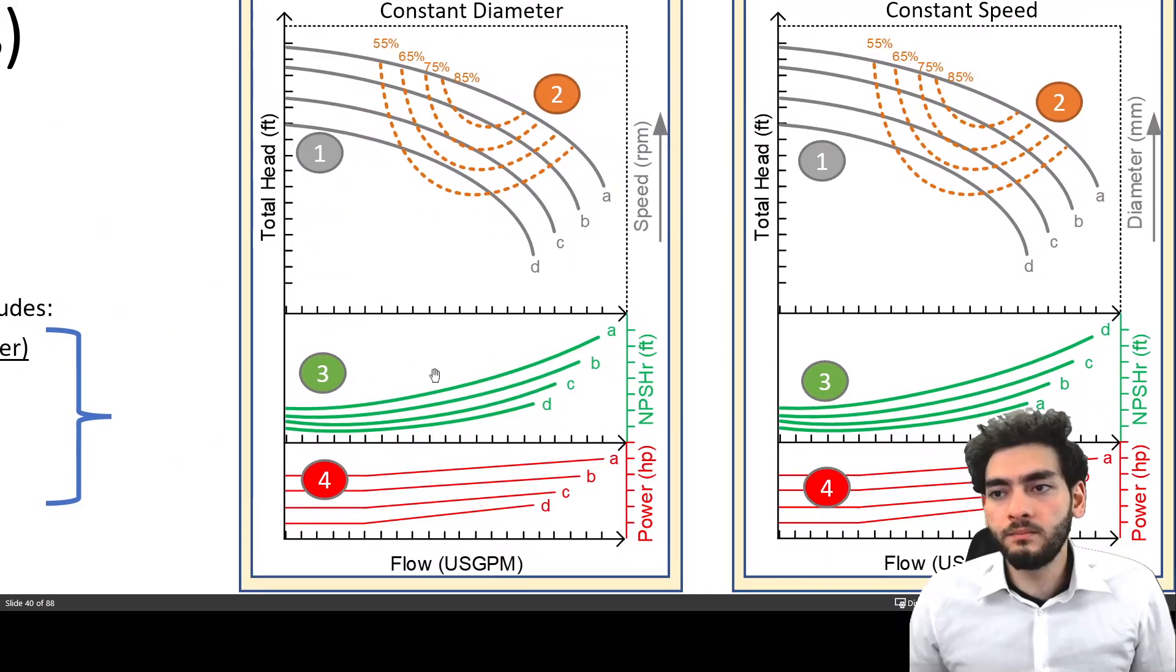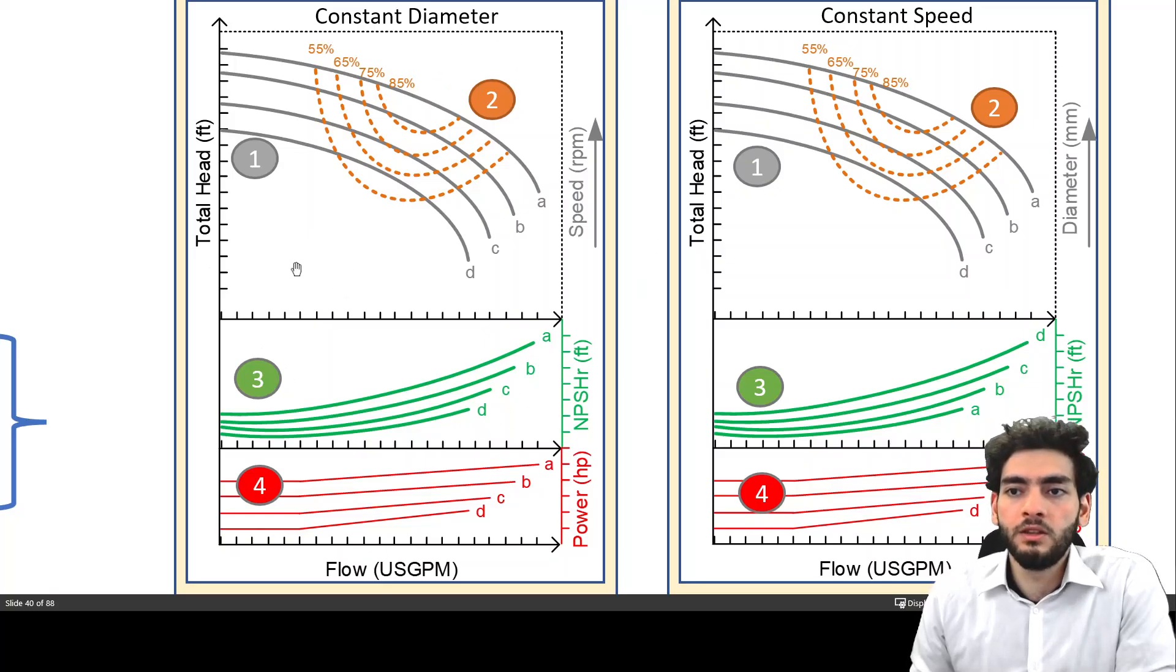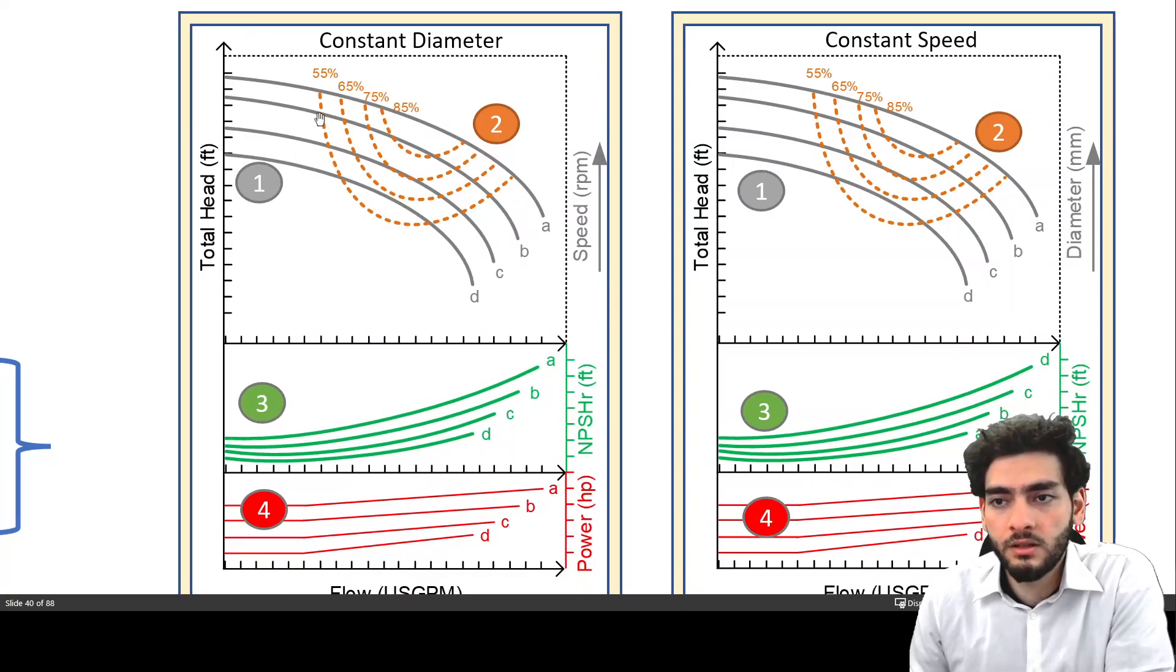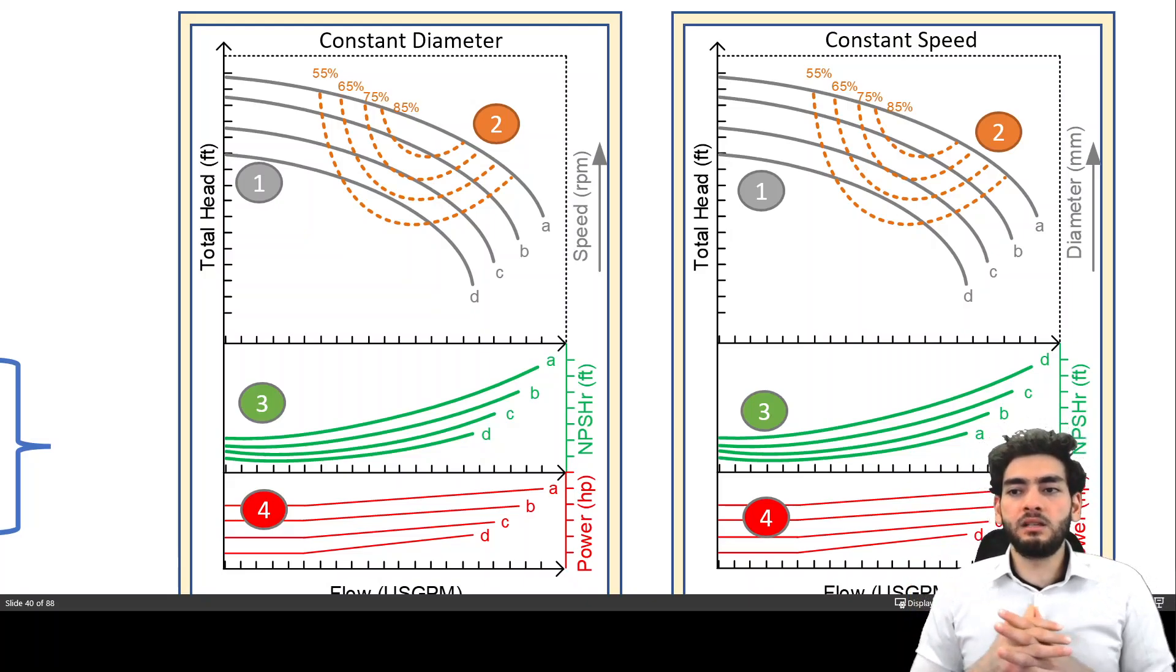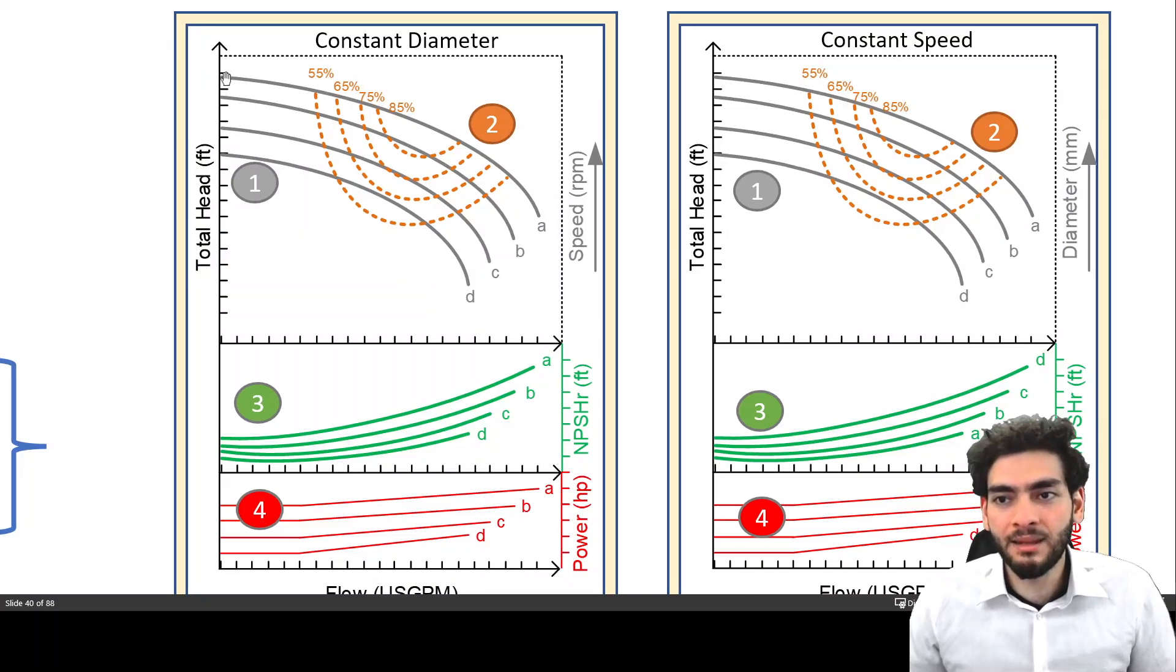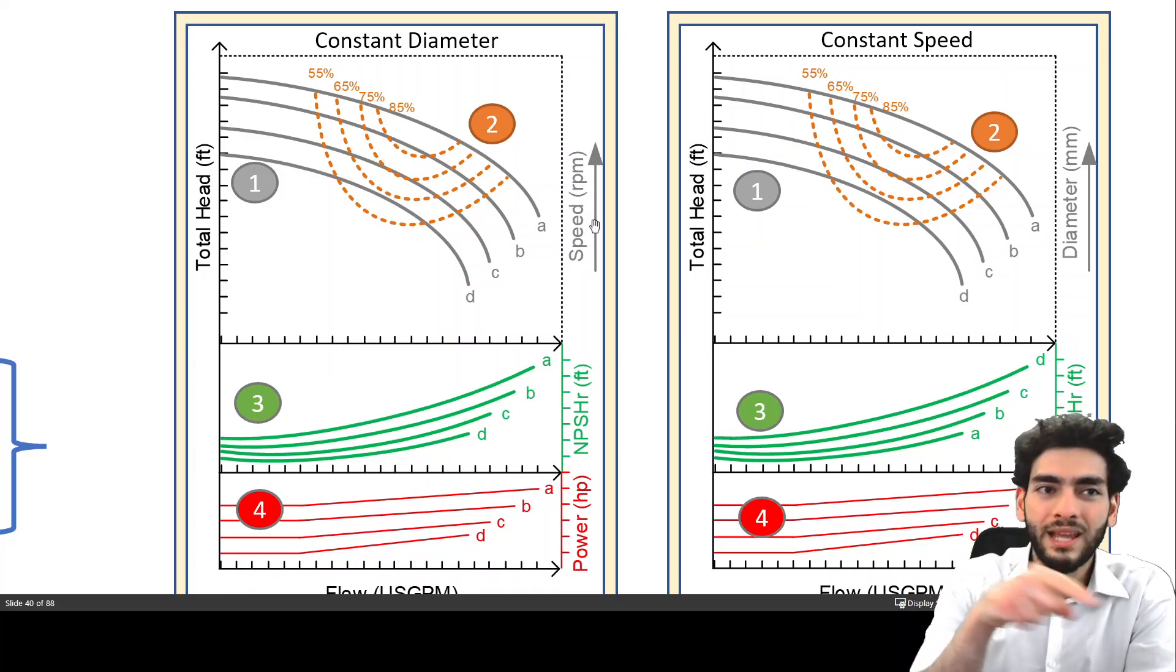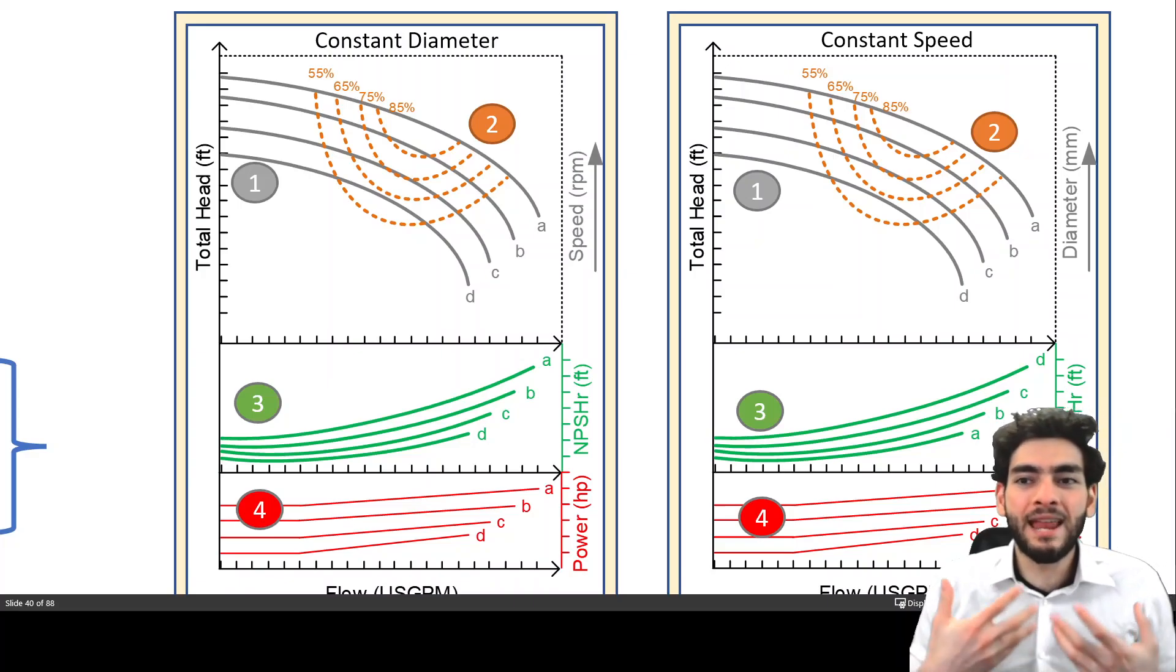So if we look at what essentially the curves look like, for a constant diameter, you can have multiple head curves depending on what speed the impellers will rotate at. And that is something that you could decide if you have a VFD, which is a variable frequency drive installed at your pump. So you could see, we've discussed that the pump curve essentially looks like this for a centrifugal pump. And if you increase the RPM, which is the rotation of the impeller, you could basically shift the curve upwards so you could generate more flow rate and more head.